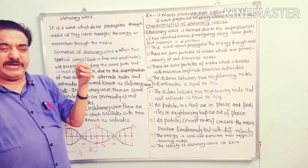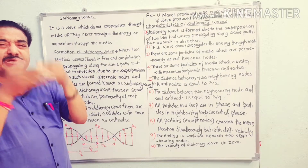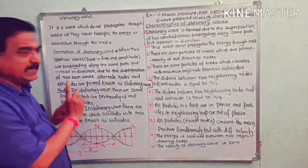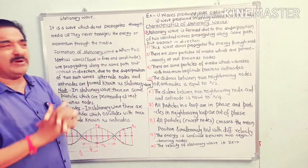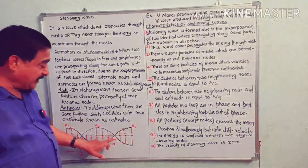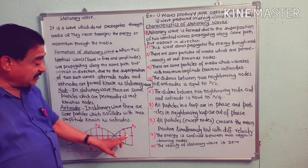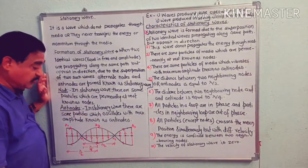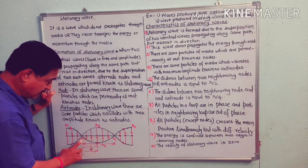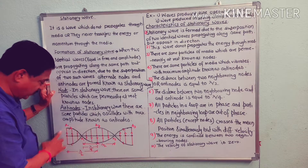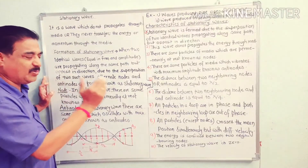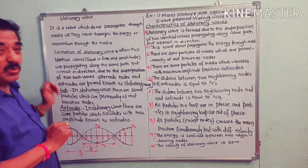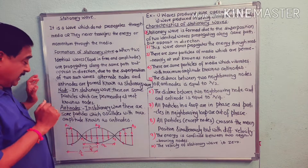For the formation of a stationary wave, two identical waves propagate along the same path but in opposite directions; due to superposition, a stationary wave is formed. This wave does not carry energy or momentum through the medium. There are particles permanently at rest called nodes, and particles oscillating with maximum amplitude called antinodes. The distance between two successive nodes or antinodes is λ/2, but the distance between a node and an antinode is λ/4.